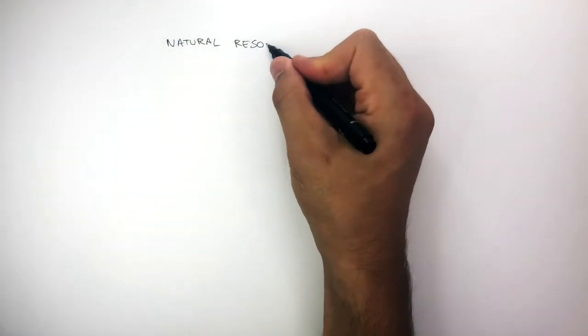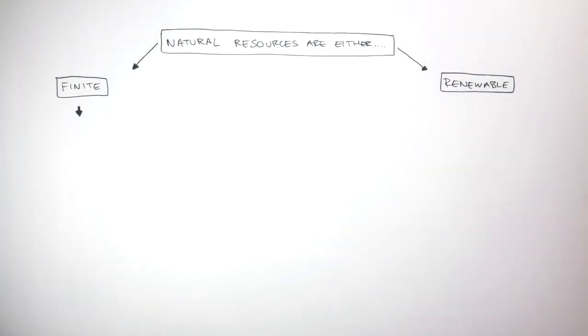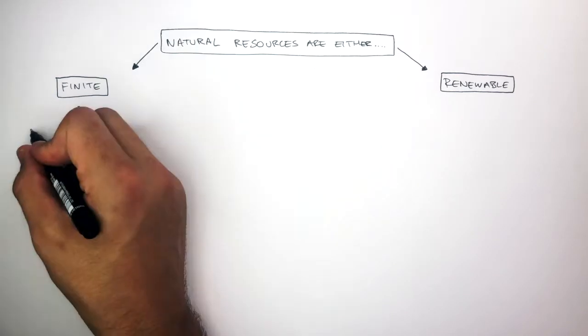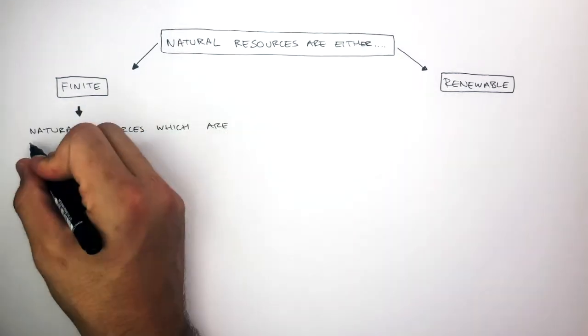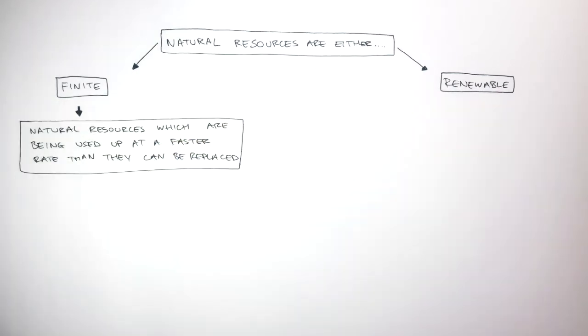Natural resources are either finite resources or renewable resources. Finite resources can be defined as natural resources which are being used up at a faster rate than they can be replaced. Finite resources normally take millions of years to form. So if we use these finite resources in seconds, minutes or even days, we then have to wait millions of years for them to be replaced.